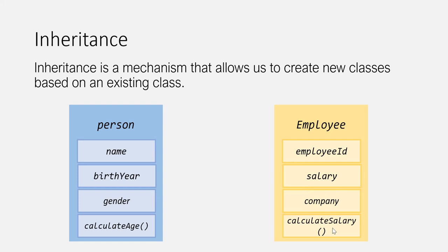Along with its own properties — employee ID, salary, company, and calculate salary method. But with inheritance, we can make an object inherit properties and methods of an existing object. So in this example, we can make the employee object inherit name, birth year, gender, and calculate age from the person object. In that way, we won't have to explicitly specify those properties for the employee object.